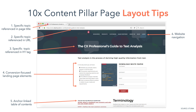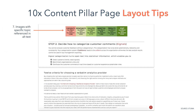Moving to the top right of the example and layout tip 6, you'll notice there's website navigation. The goal of this page is to create a positive experience for the visitor, not force them to convert as a landing page would. Moving on to tip 7, use relevant images throughout the page with a specific topic reference in the alt text.